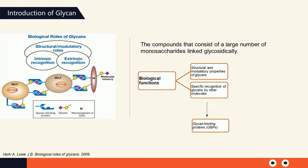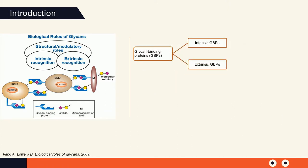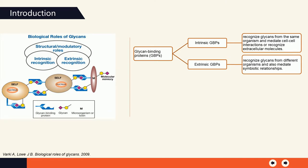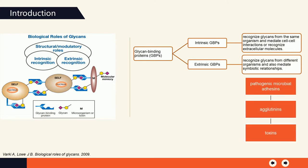The glycan-binding proteins can be divided into two types: intrinsic glycan-binding proteins and extrinsic glycan-binding proteins. The intrinsic glycan-binding proteins recognize glycans from the same organism and mediate cell-to-cell interactions or recognize extracellular molecules. The extrinsic glycan-binding proteins recognize glycans from different organisms and some also mediate symbiotic relationships. They contain pathogenic microbial adhesins, agglutinins, or toxins.